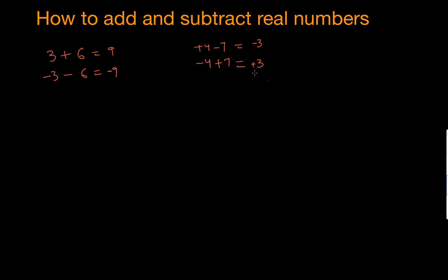And here, signs are opposite — subtract, got 3, and the bigger number is 7. The sign in front of 7 is plus, so this is positive 3. To recap: when signs are the same, just add them and use that sign. When signs are opposite, subtract them, find the bigger number, and use its sign.